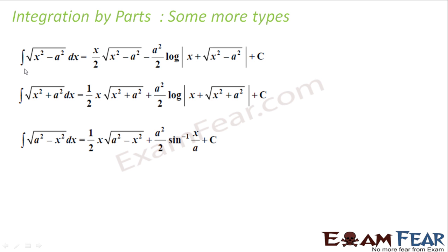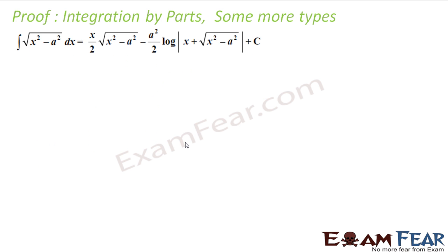If you see, when it is x²−a² or x²+a², the formulas are almost the same — just a difference in sign. But when it is a²−x², then it involves sin⁻¹(x/a). Here we'll prove all three. Let's try the first using ILATE.